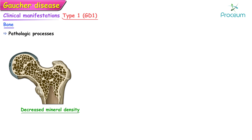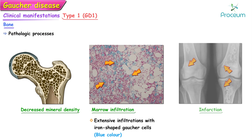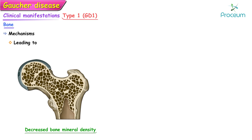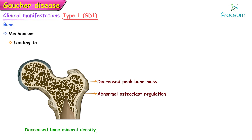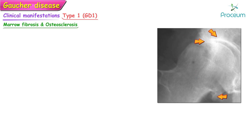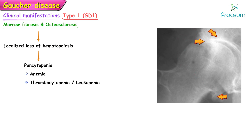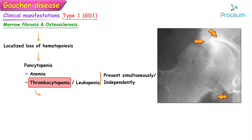There are several pathologic processes within the bone, including decreased bone mineral density, bone marrow infiltration, and infarction of the bone. Mechanisms leading to decreased bone mineral density include failure to achieve peak bone mass, abnormal osteoclast regulation, and overproduction of cytokines by activated macrophages. Bone marrow fibrosis and osteosclerosis result in localized loss of hematopoiesis, leading to pancytopenia — hence anemia, thrombocytopenia, or rarely leukopenia may be present simultaneously or independently.